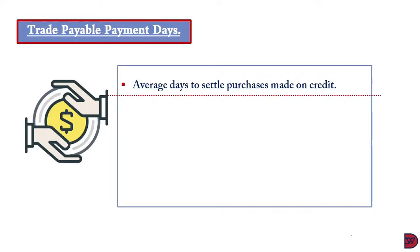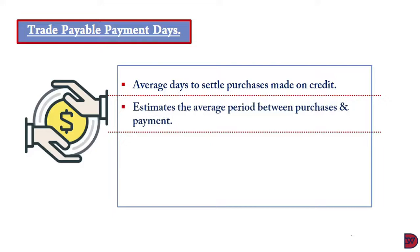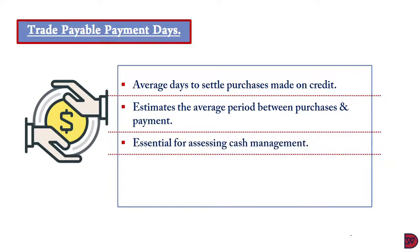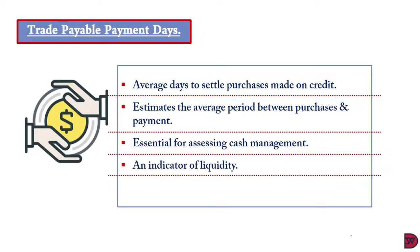The trade payable payment period is the number of days it takes for a business to settle purchases made on credit. It is also the average number of days between when purchases are made and when payments are made to payables — also called creditors. This is essential for assessing cash management; if you have 30 days to pay and only 5 days remain, you can plan your cash outflow accordingly.